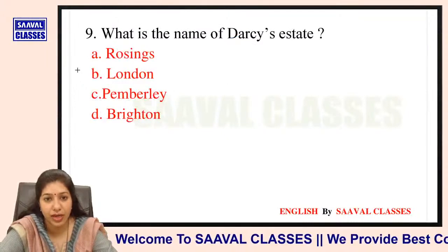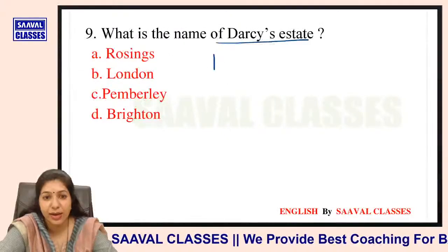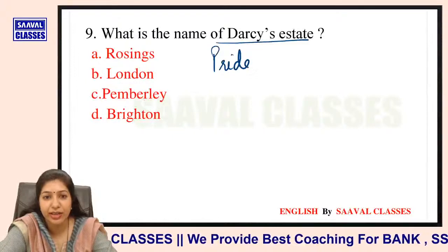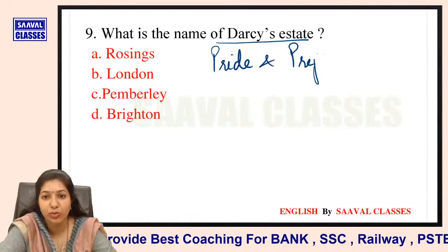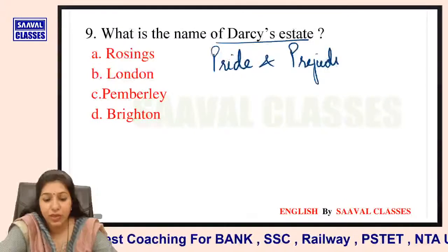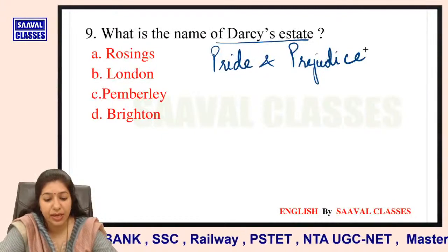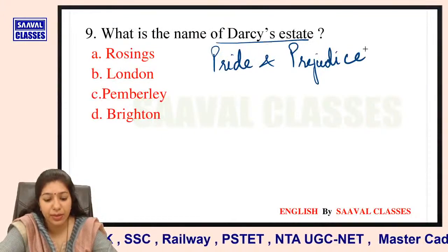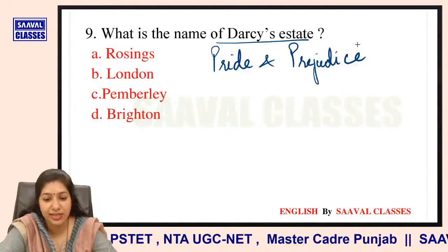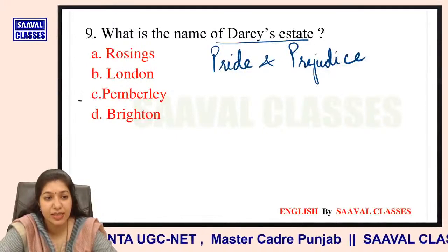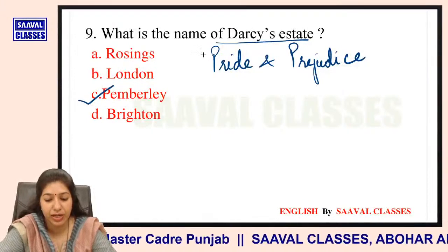Question number 9: What is the name of Darcy's estate in Pride and Prejudice? Options are Rosings, London, Pemberley, ya Brighton? Darcy's estate is Pemberley. Darcy ki estate ka naam hai Pemberley.